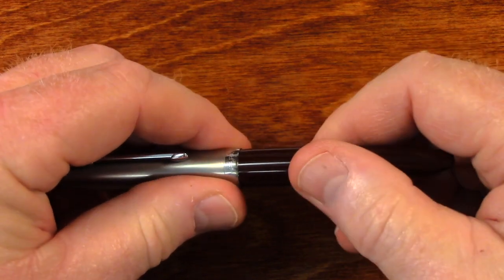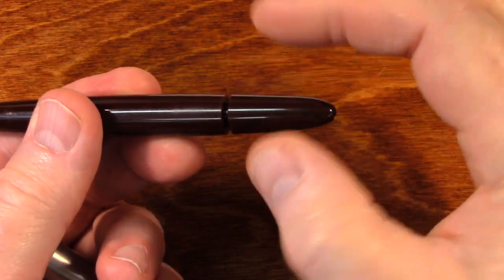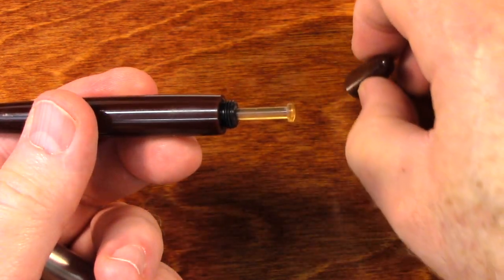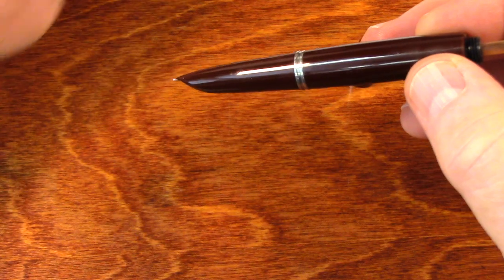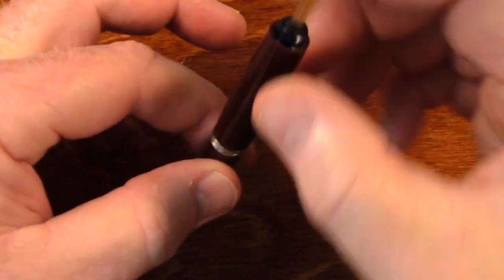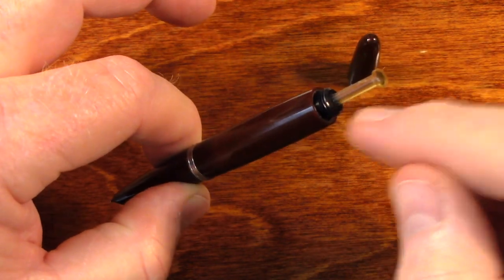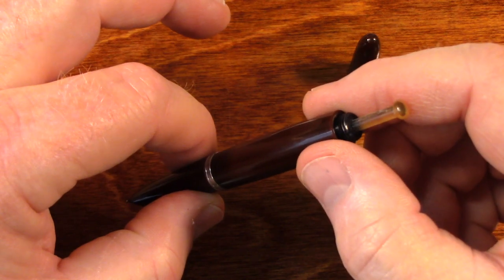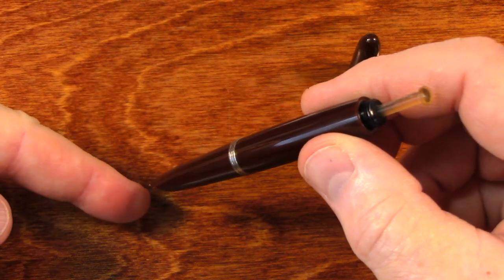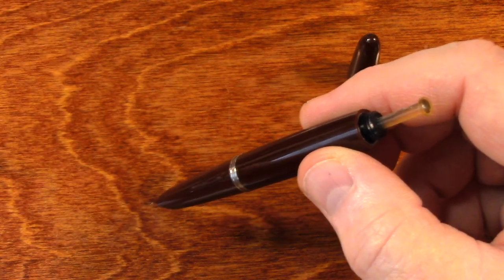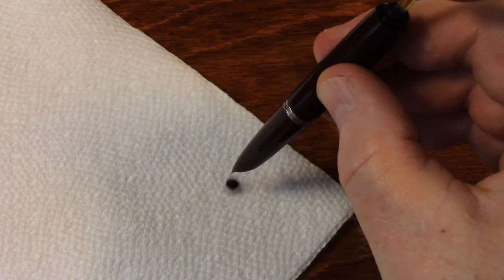The way you fill this pen is you screw this off and you dip this end of the pen into the bottle and sit there and press this button five or six times. I'm not going to press it. But if I press it, it will squirt ink. I could probably show you that.